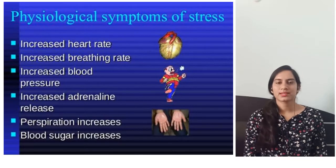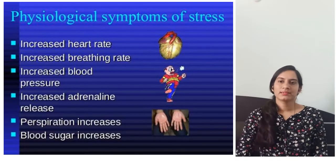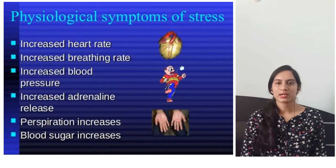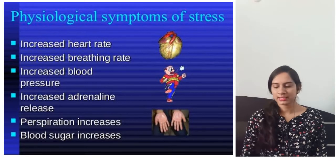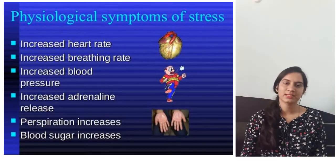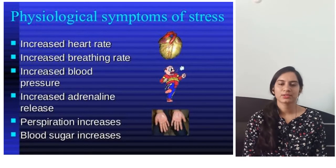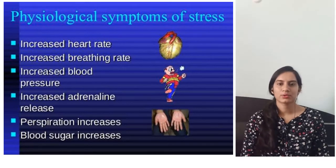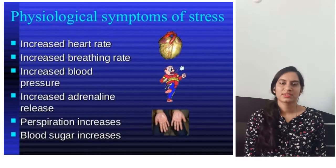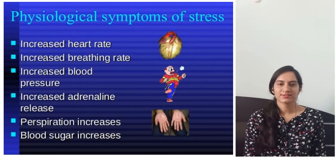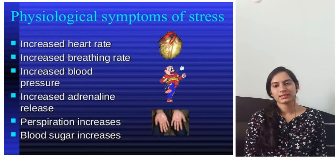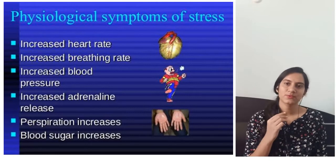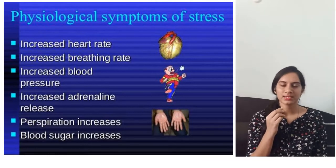The physiological symptoms of stress on our body include increased heart rate, increased breathing rate, increased blood pressure, and increased adrenaline release. The adrenal glands, a pair of glands located just above the kidneys, secrete the hormone responsible for stress when the body feels it. Other physiological symptoms include increased perspiration and increased blood sugar. These are the physiological symptoms shown during a stressful condition.